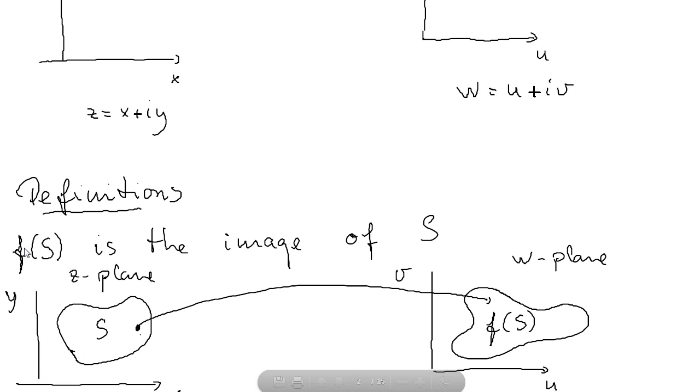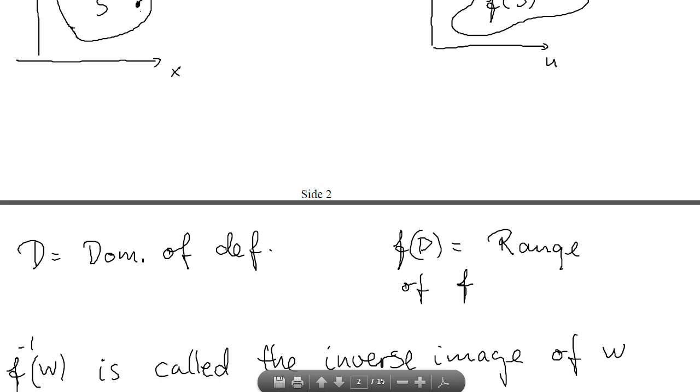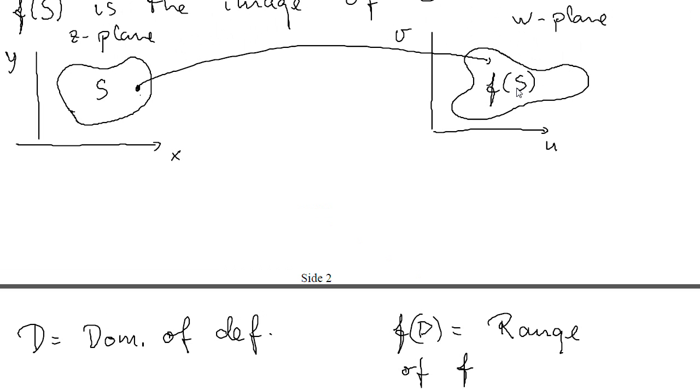We say that f of some set capital S is the image of a set S. What does this mean? This means the set of all points f of z in the range, where z is some point in the domain of definition. That's called the set f of z.